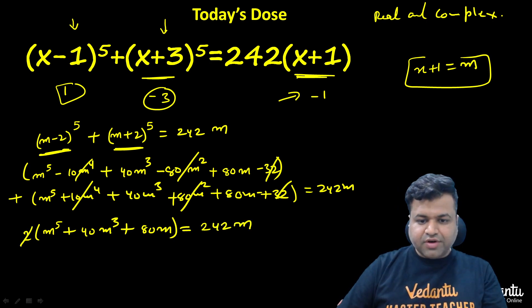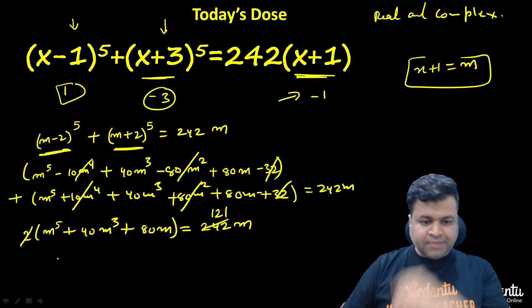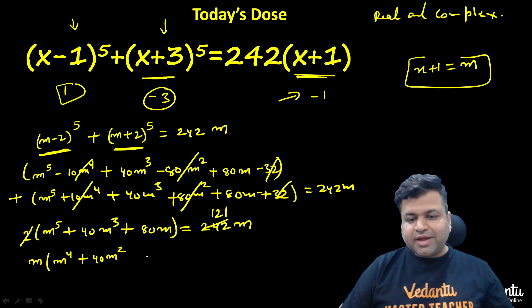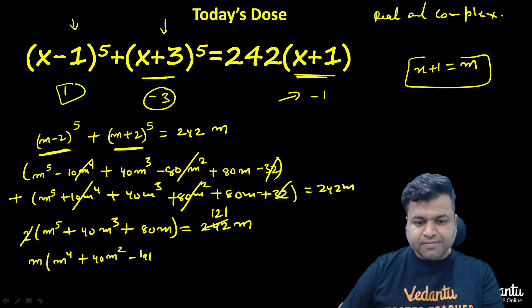Now we can cancel out this 2. And what we will get? 121m on the left-hand side. We can find 1 m common. So we are left with m(m^4 + 40m^2 - 41) = 0.